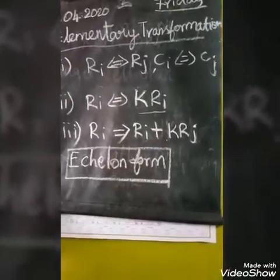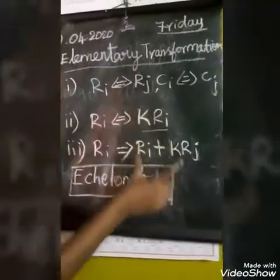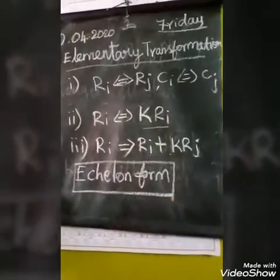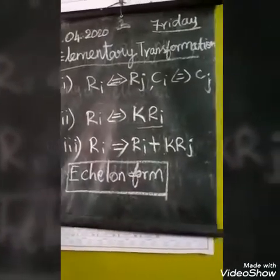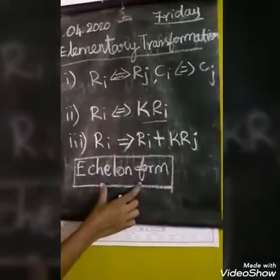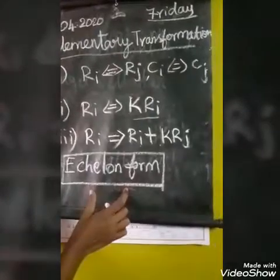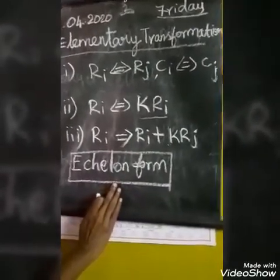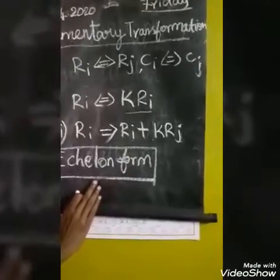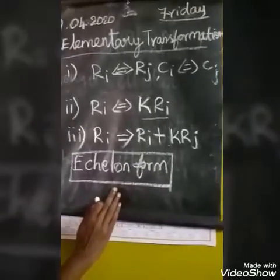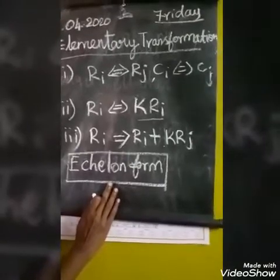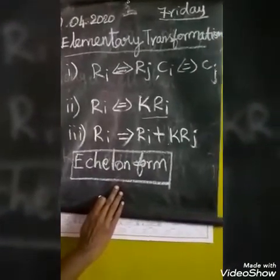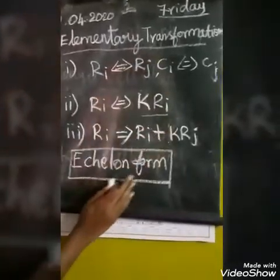Using these elementary transformations, we make the Echelon form and find the rank of the matrix. What is Echelon form? Every row of A which has all its entries zero occurs below every row which has a non-zero entry. Let us find the rank of the matrix using elementary transformations.